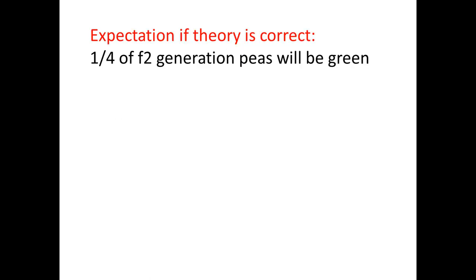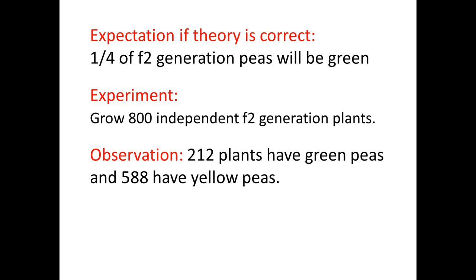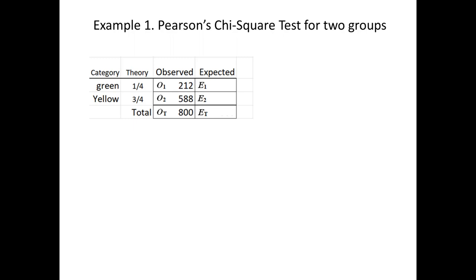He ran an experiment. For example, he might grow 800 independent plants from this second generation — independent meaning the peas didn't come from the same pod or the same plant. Suppose he observed 212 plants with green peas and 588 with yellow peas. Is this consistent with the theory? For Mendel, he was left with pretty much hand-waving, saying you might expect a quarter of 800, about 200, to be green — and 212 is pretty close, don't you think? Let's put this information into a table where we can see it more clearly.